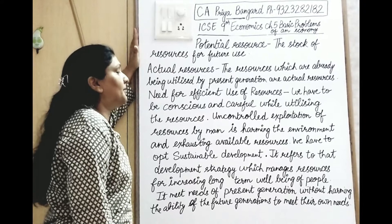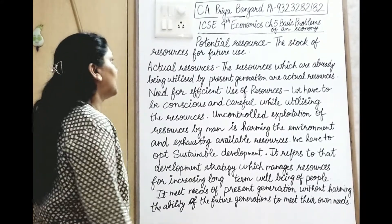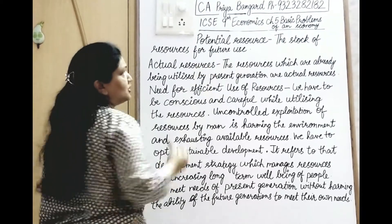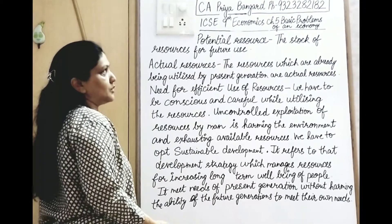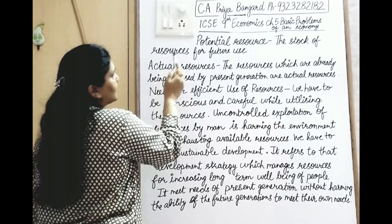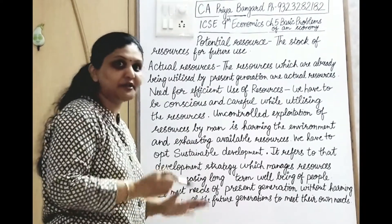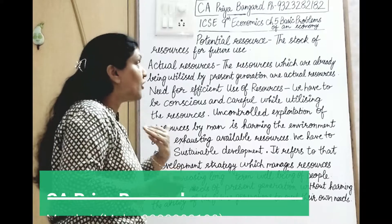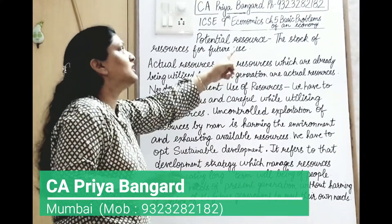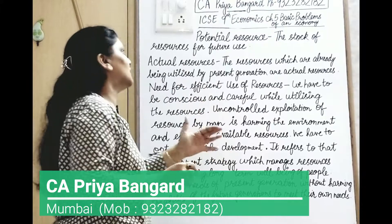ICC 9th Economics Chapter 5: Basic Problems of an Economy. Now let's understand what is Potential Resource. It is the stock of resource for future use — you are not using it currently, but will use it in the future. That is Potential Resource.